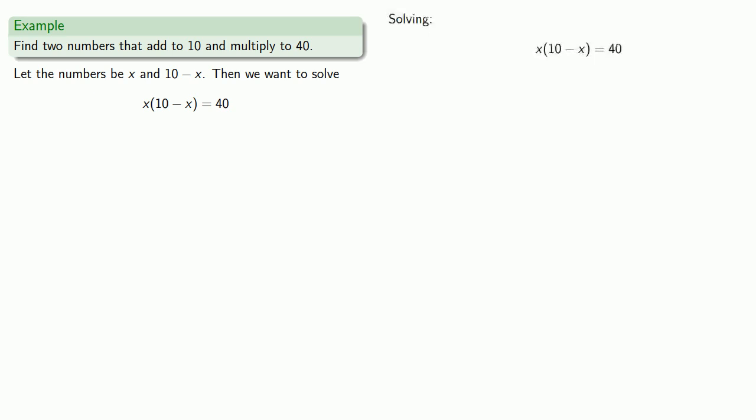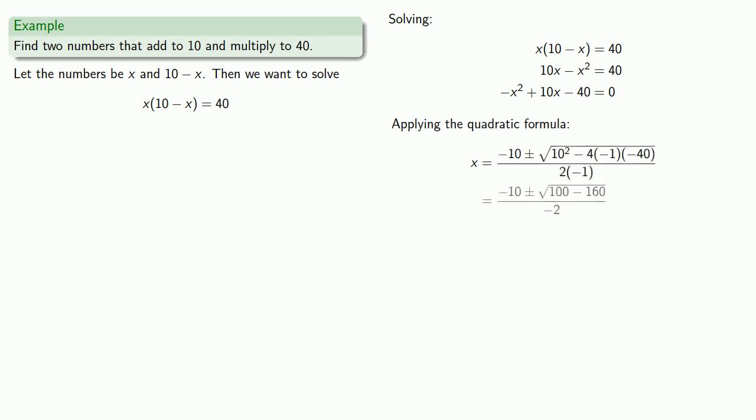If in doubt, multiply out. And that gives us a quadratic equation. We'll put it in standard form and then apply the quadratic formula. And, uh-oh, we're trying to take the square root of a negative number. And negative numbers don't have square roots.